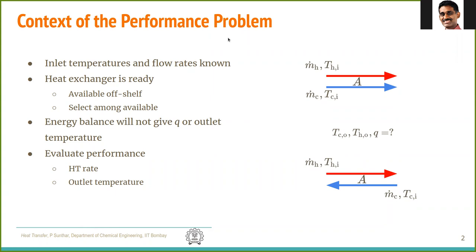In the performance problem, only the inlet temperatures and flow rates are known. In the case of a parallel flow exchanger, we know m-dot, the hot fluid inlet, and the cold fluid inlet. The area is also known — meaning the heat exchanger is readily available, either an off-shelf unit or an existing exchanger being repurposed. What we don't know is the outlet temperature of either fluid.